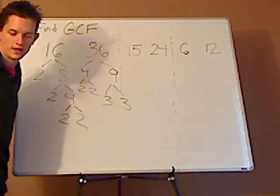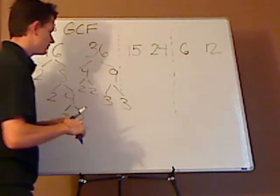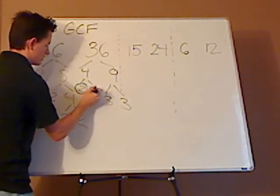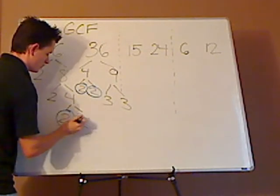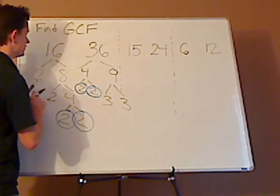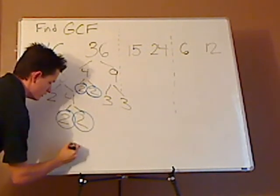When you're dealing with a GCF, you want to see what they have in common. And what they have in common is a pair of 2s, each of them. So, the GCF of 16 and 36 would be 4.